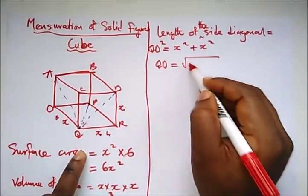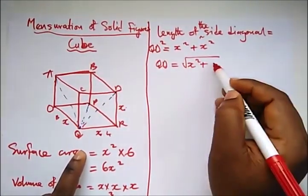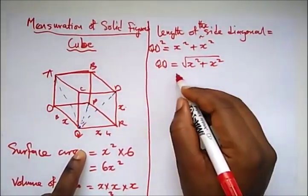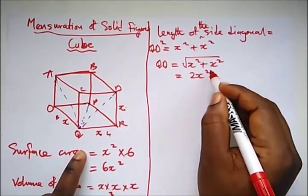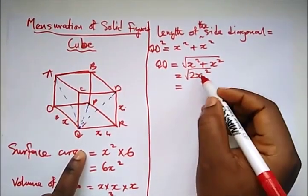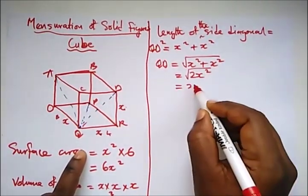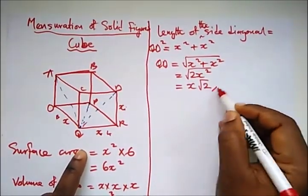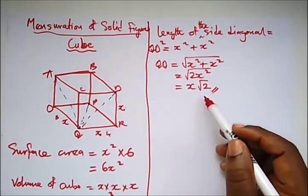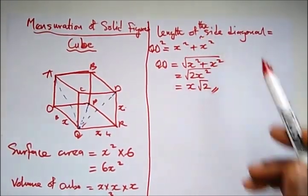And which will be, you know, this, let's say this diagonal is what? QD². And so QD will be equal to the root of x² plus x², which is what? 2x². Right? And if we square root this, x² becomes x alone, so we have what? x√2. So this is the formula for calculating the length of the side diagonal.